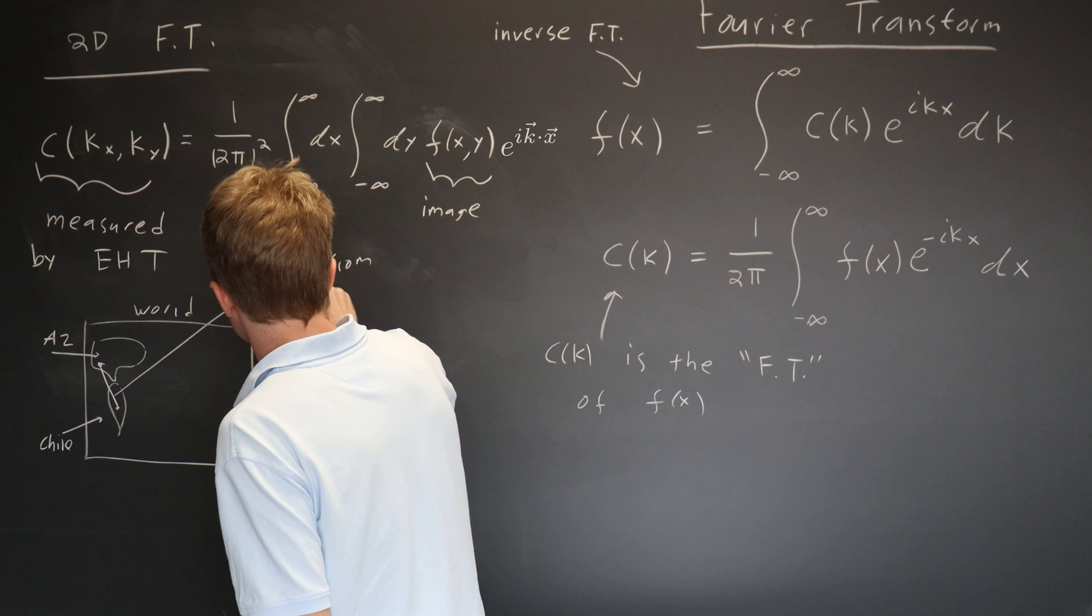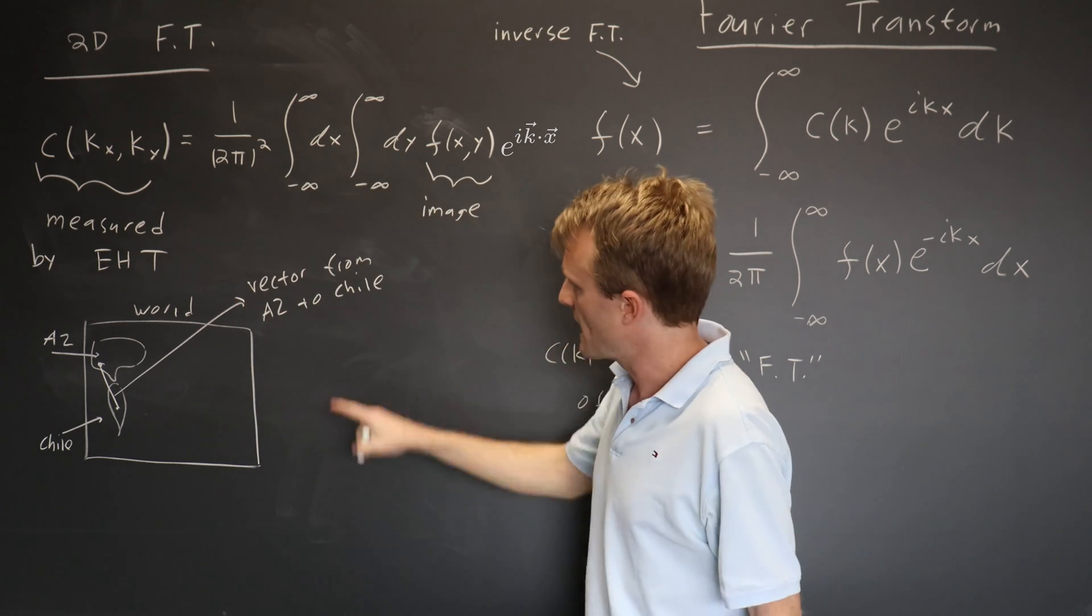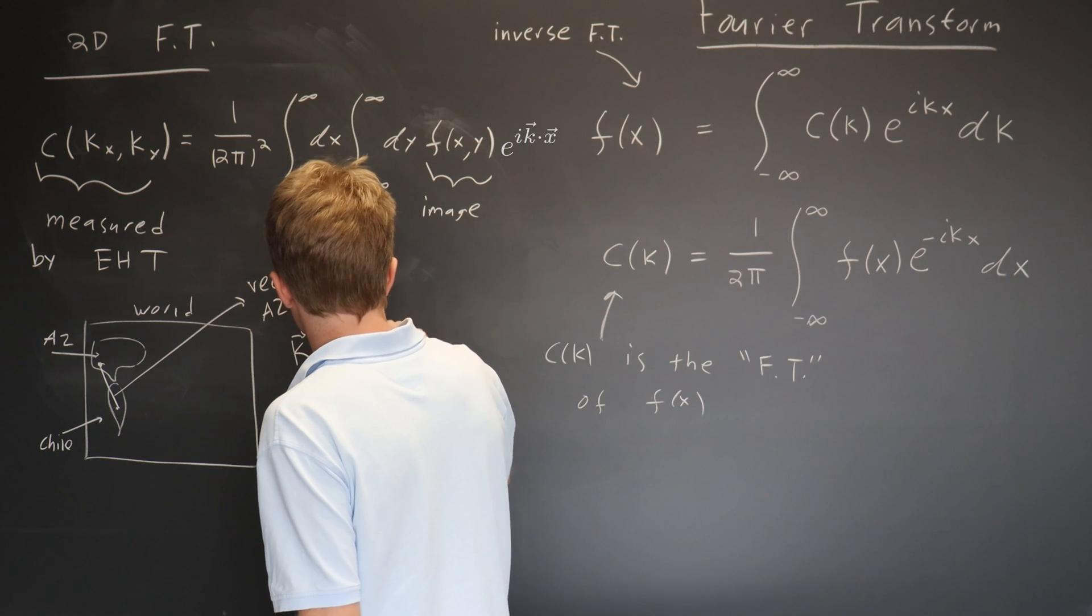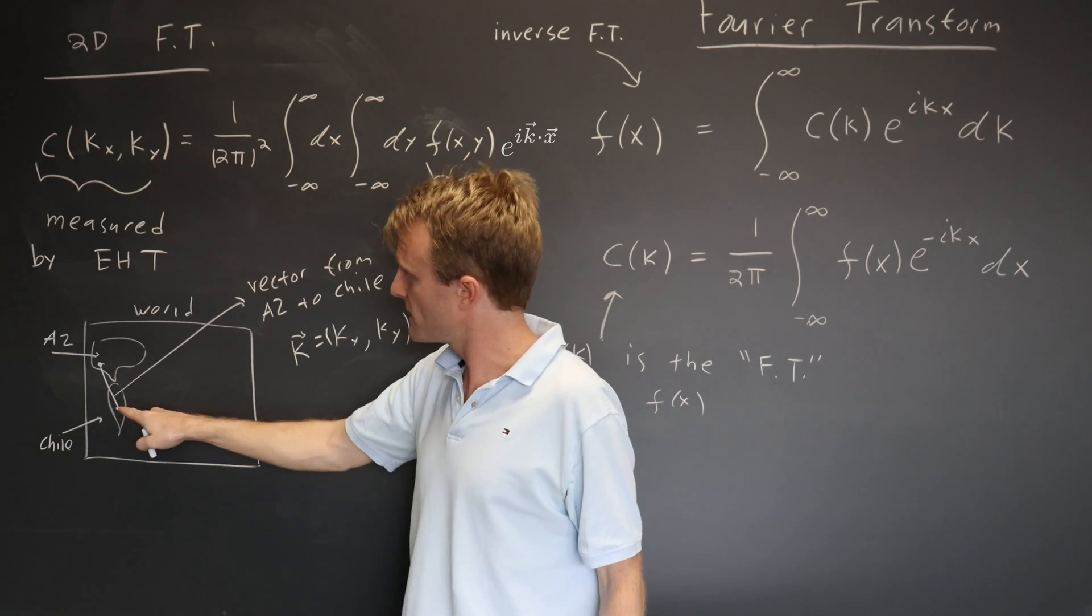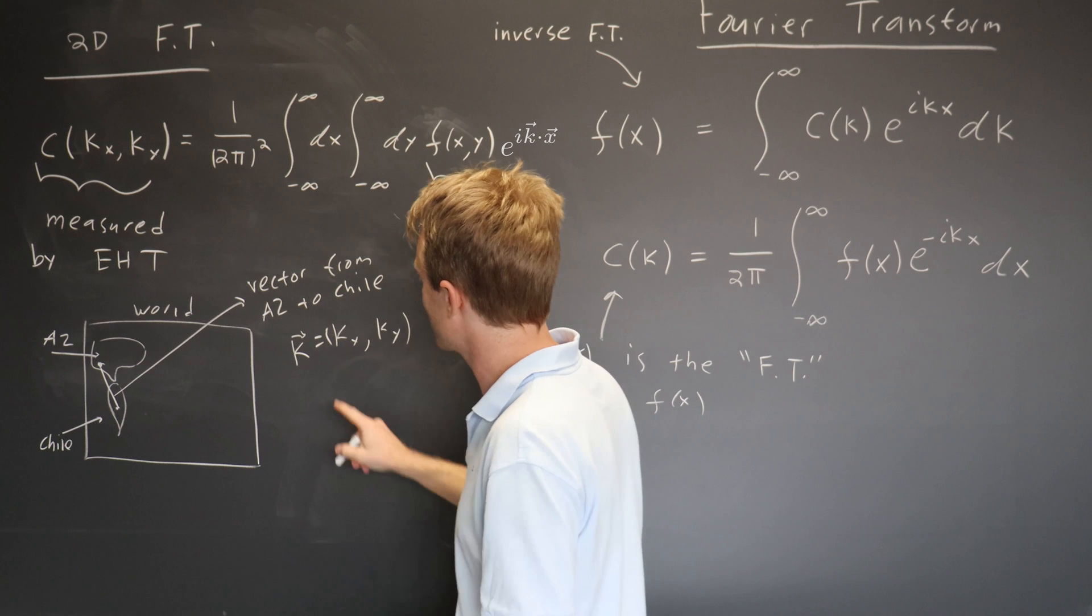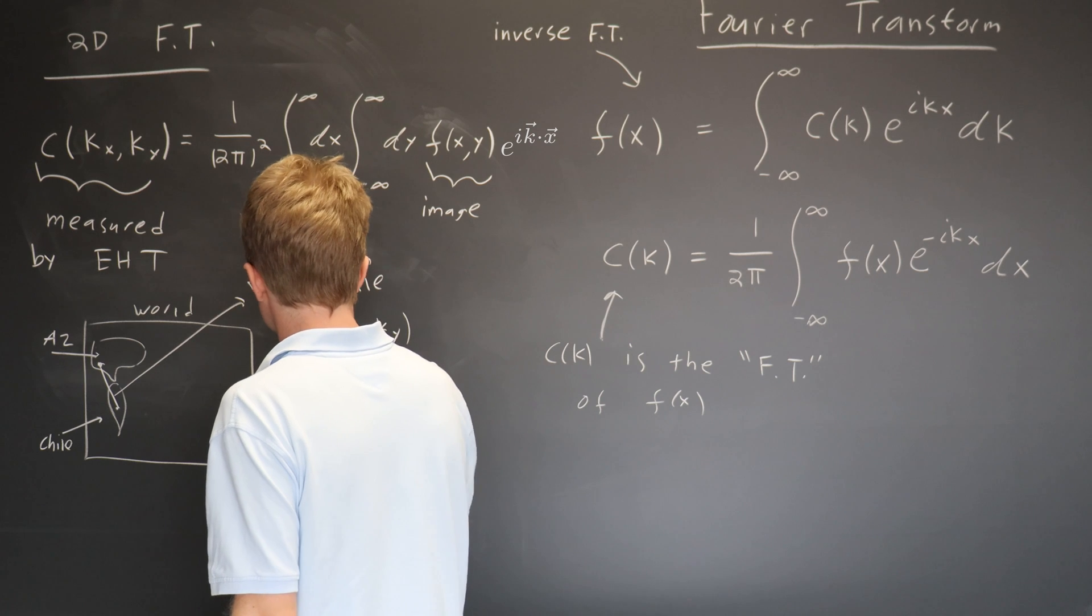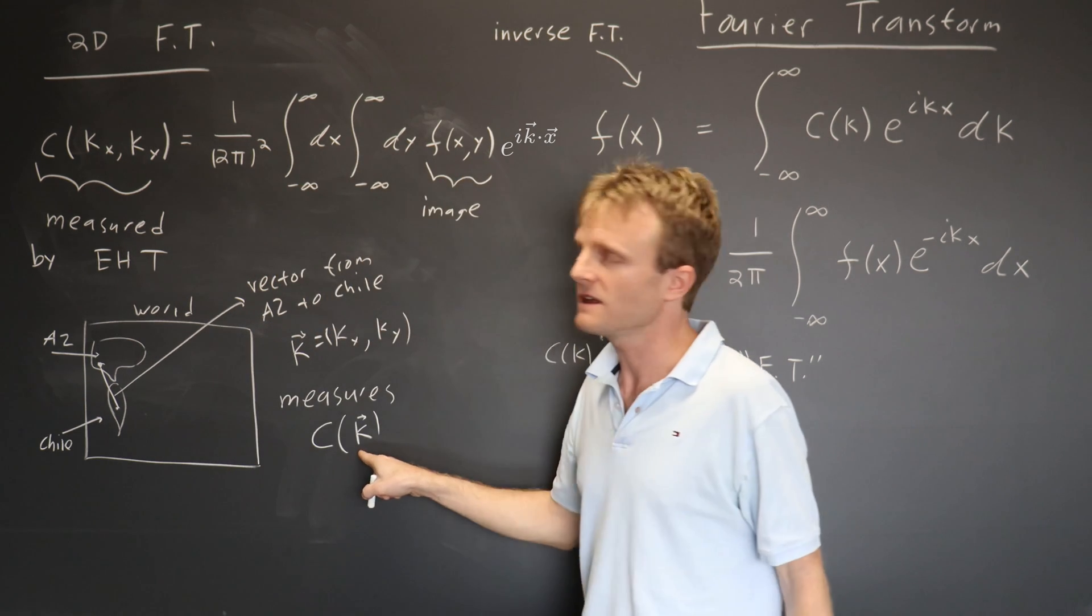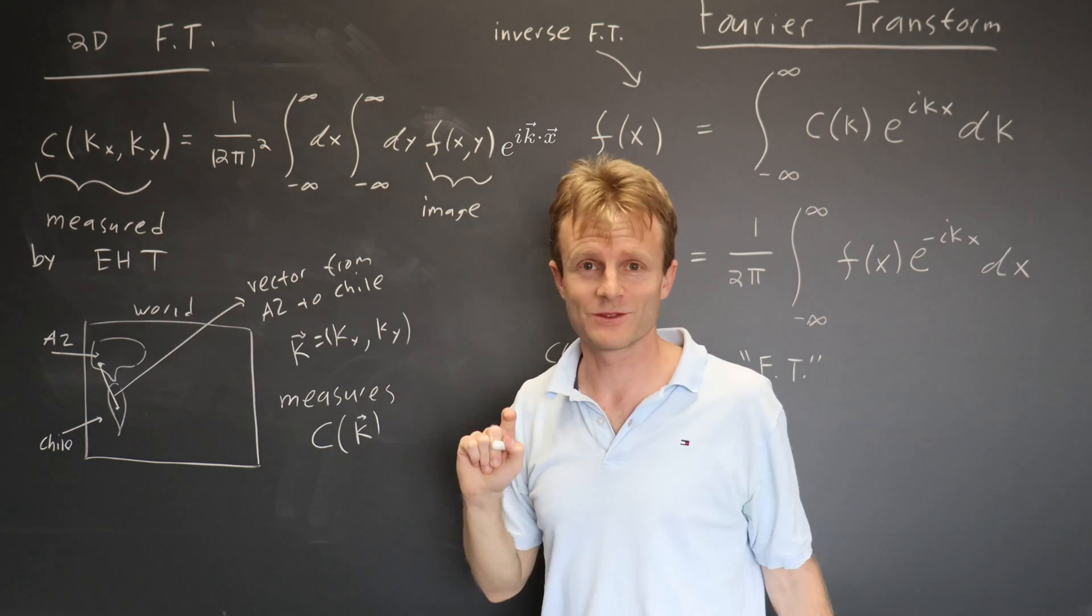and that vector, we're going to call k, equals kx, ky, and by measuring the local electric field at these two points and multiplying it together, that turns out to exactly give you it measures c of k. And so you get one little piece of the Fourier transform of the image brightness.